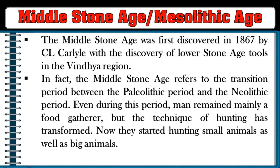The Middle Stone Age (Mesolithic Age) was first discovered in 1867 by C. L. Carlyle with the discovery of miniature stone tools in the Vindhya region. The Mesolithic Age refers to the transition period between the Paleolithic and Neolithic periods. Even during this period man remained mainly a food gatherer, but the technique of hunting transformed — they started hunting both small and large animals.